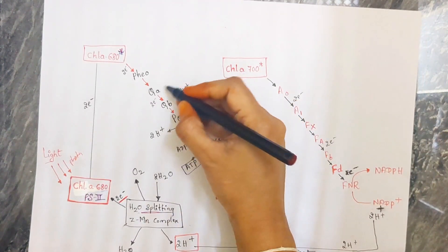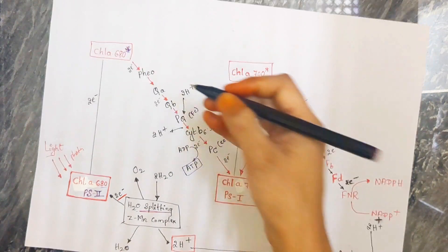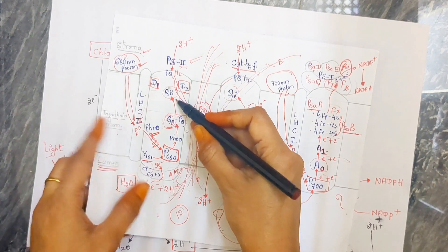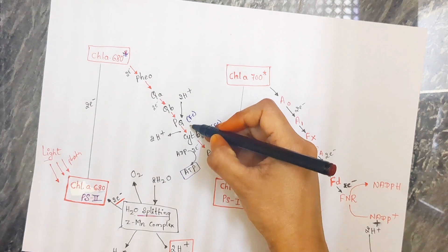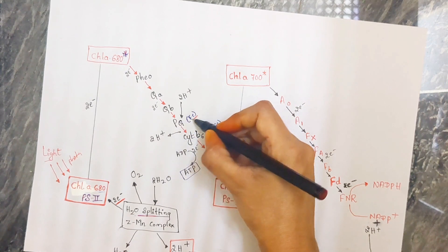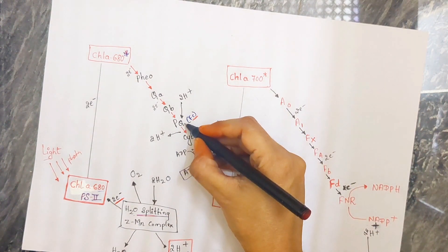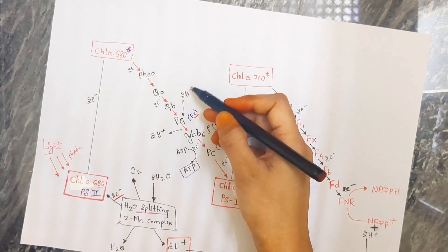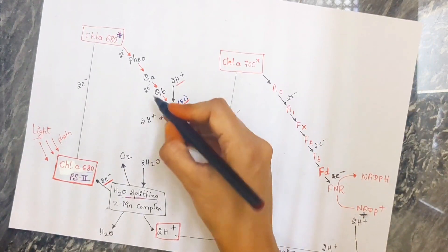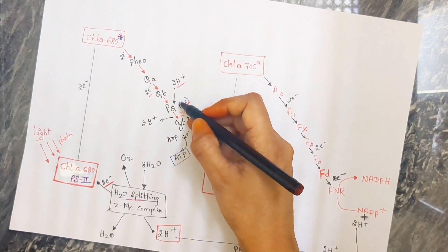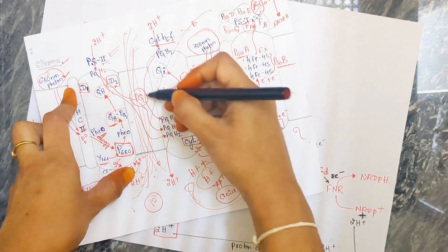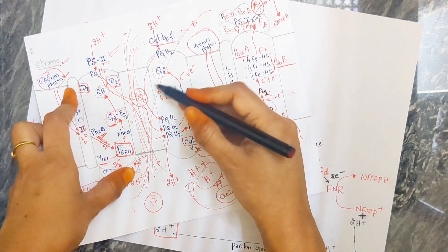From pheophytin, electrons are then given to QA and QB, as you can see in the diagram. And it is transferred into the plastoquinone, which has iron. Plastoquinone is an exam point — iron is present in plastoquinone, and it also has two hydrogen atoms. Then these electrons move from plastoquinone into the cytochrome B6F component.